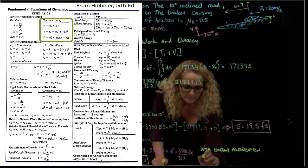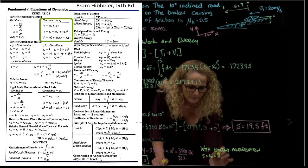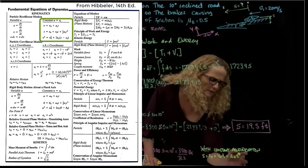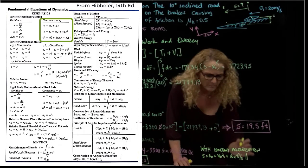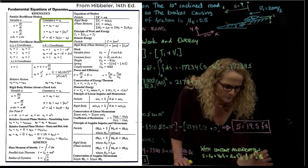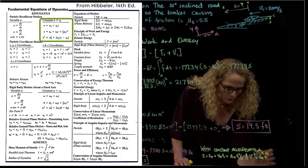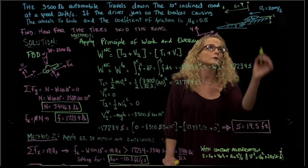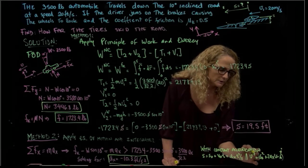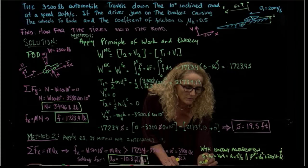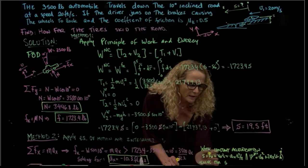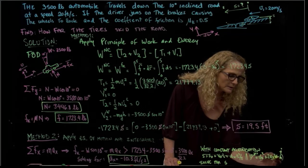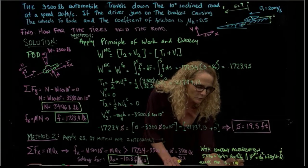with constant acceleration, we can write that S equals S0 plus V0 T plus one half AX T squared. I don't have time, so this is one equation. The other equation that I have is velocity squared equals velocity 0 squared plus 2 AX times S minus S0. S0 is 0, velocity 0 is 20, and the final velocity is 0, so I solve for S. Using this equation, I have AX, I have initial velocity, and solving for S gives me exactly the same solution, 19.5 feet.